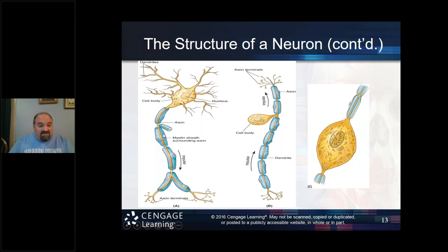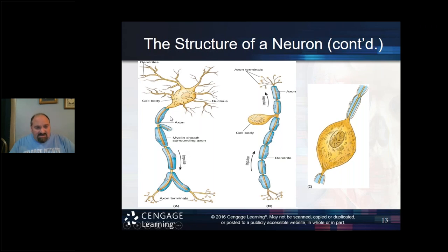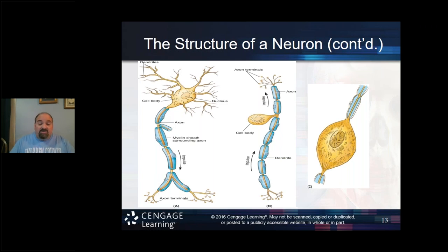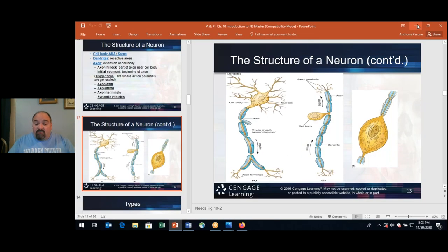We call that saltatory conduction — when the action potential is jumping from node to node along a myelinated axon. The myelin itself is actually the plasma membrane of the Schwann cell, which is a lipid — a fat. So myelin is composed of fatty tissue, whether it's from Schwann cells in the peripheral nervous system or oligodendrocytes in the central nervous system.